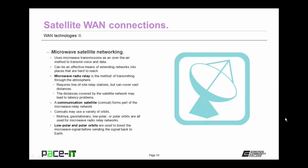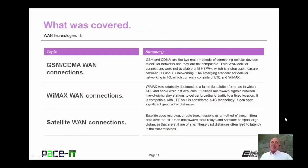Communications satellites are also known as COMSATs — they form part of the microwave relay network. COMSATs can use a variety of orbits, including Molniya, geostationary, low-polar, or polar orbits. The low-polar and polar orbits are used to boost microwave signals before sending the signal back to Earth.